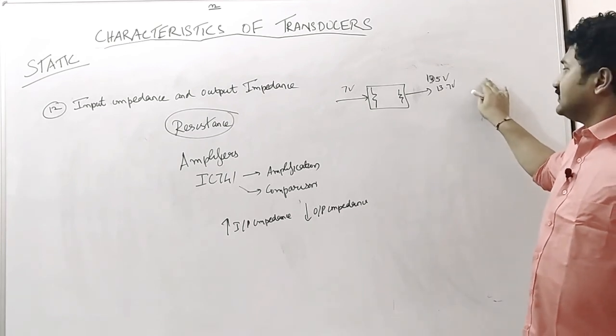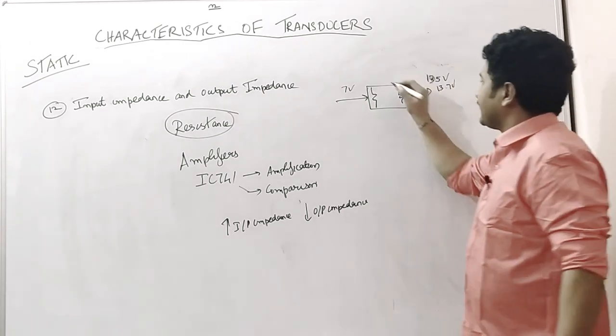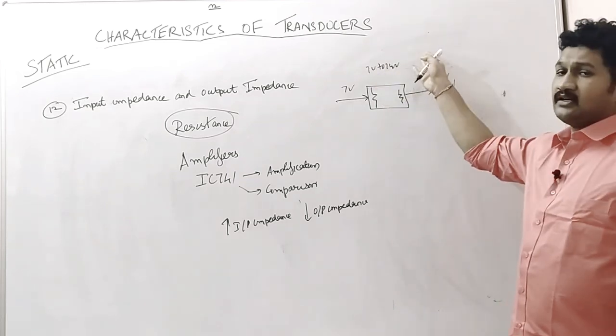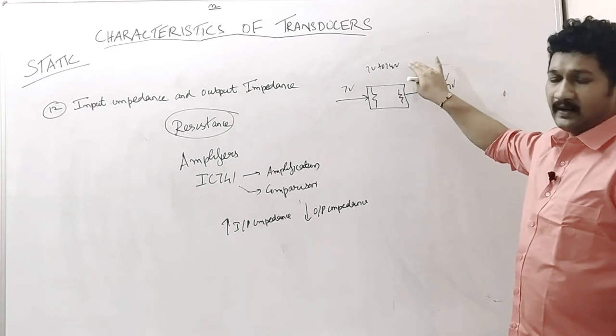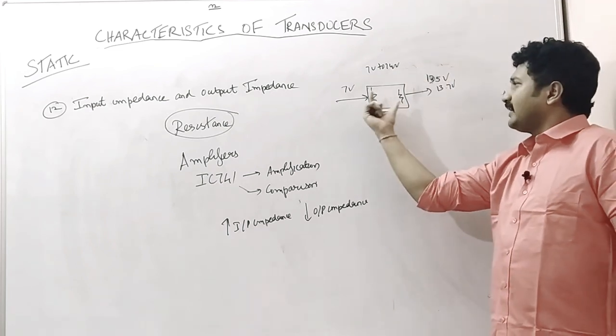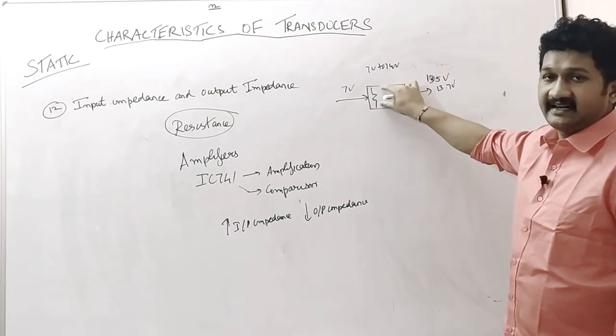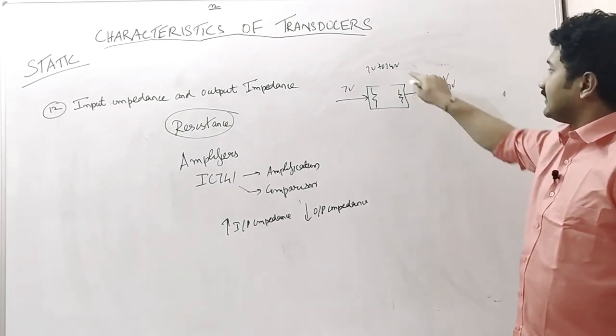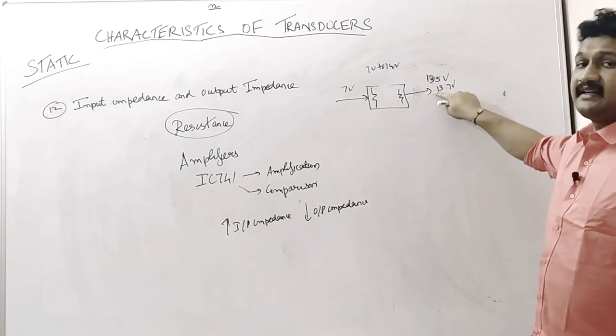This is the reason—for example, the amplifier, 7 volts to 14 volts, has to be amplified twice. In order to amplify twice, first the input should be acquired fully—the input impedance should be greater. After processing, the output impedance should be very low, and this 14 volts without any glitch should be sent as output.